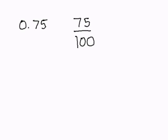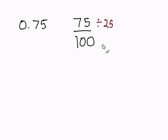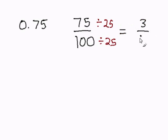Now we should always reduce whenever possible. 75 and 100 can both be divided by 25. Our resulting fraction is 3 over 4, and this completes our problem.